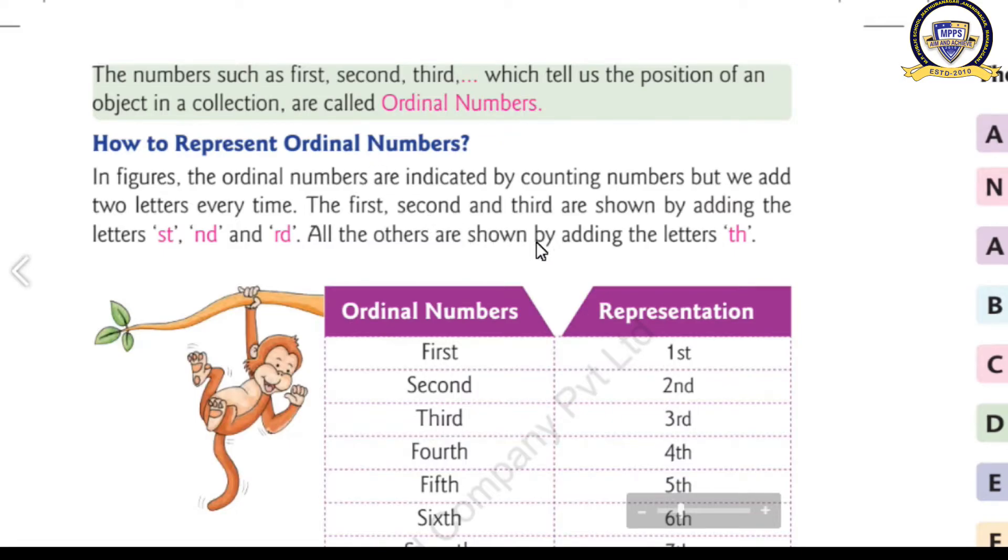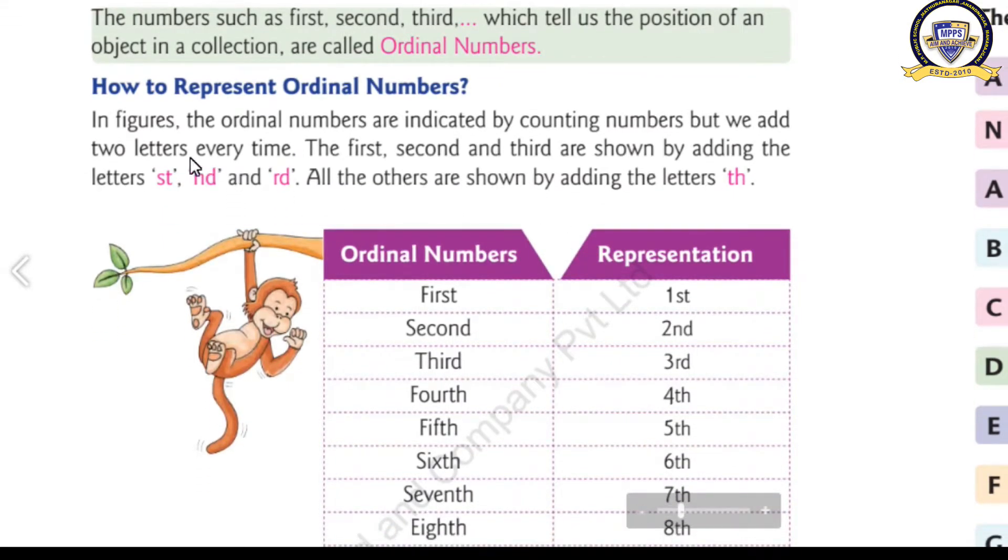Then our next topic. How we can represent these Ordinal Numbers? If it is a Cardinal Number, we are representing by the use of the numerals. 1, 2, 3, 4, 5, 6. By the use of that figure, we will express the number. If it is 21, 2 and 1 are the digits. And the collection of that figure, that 21 is the numeral form.